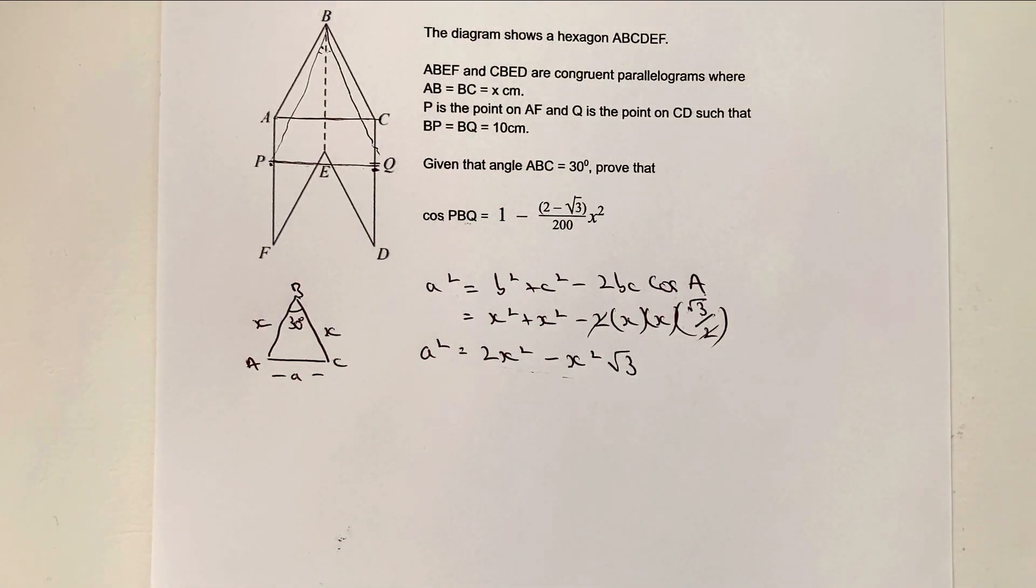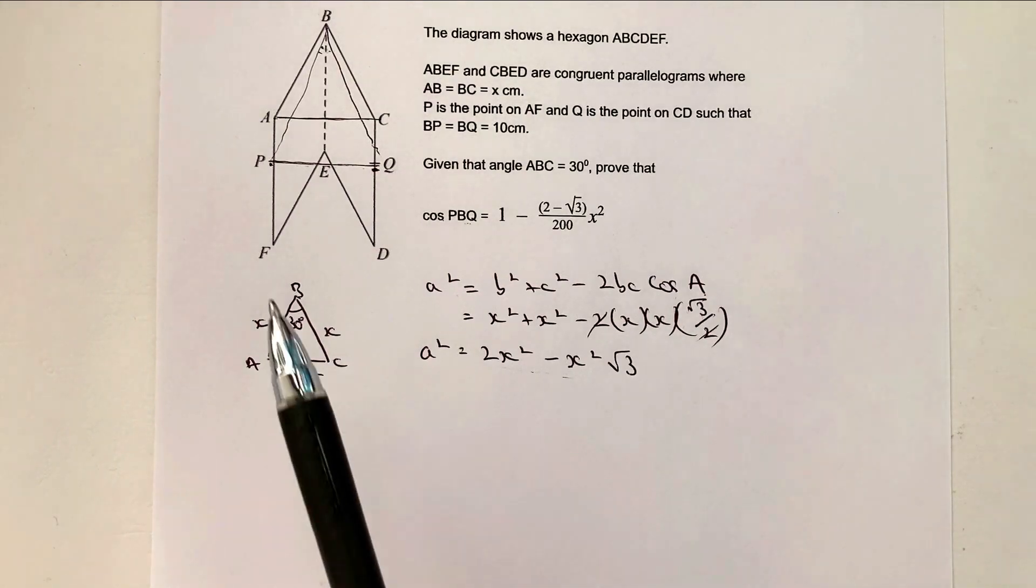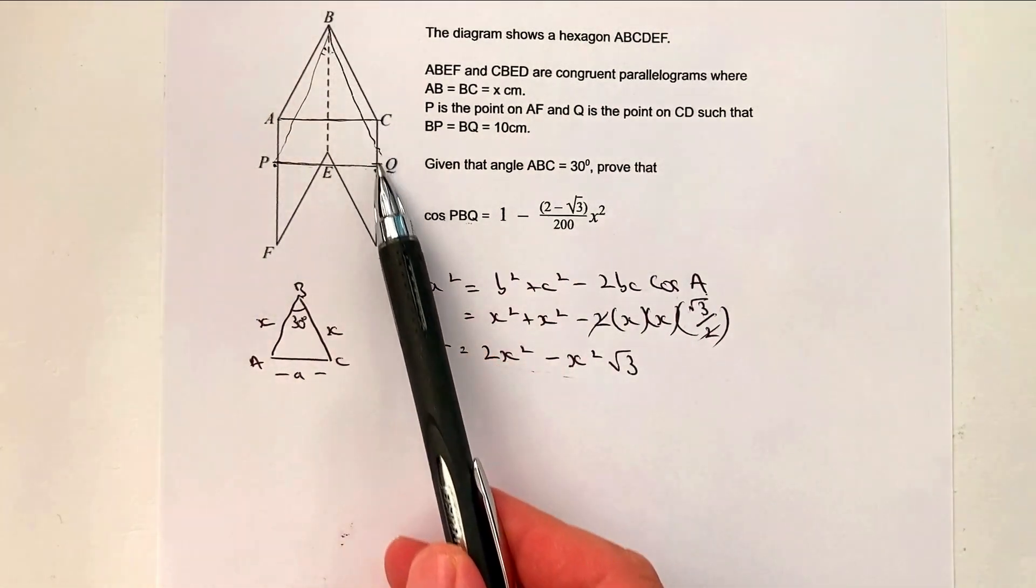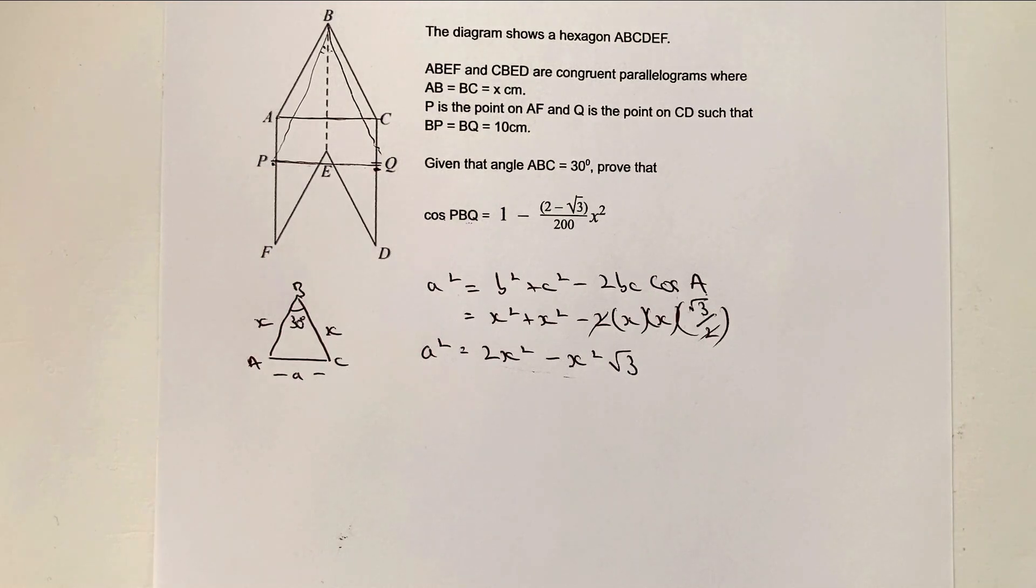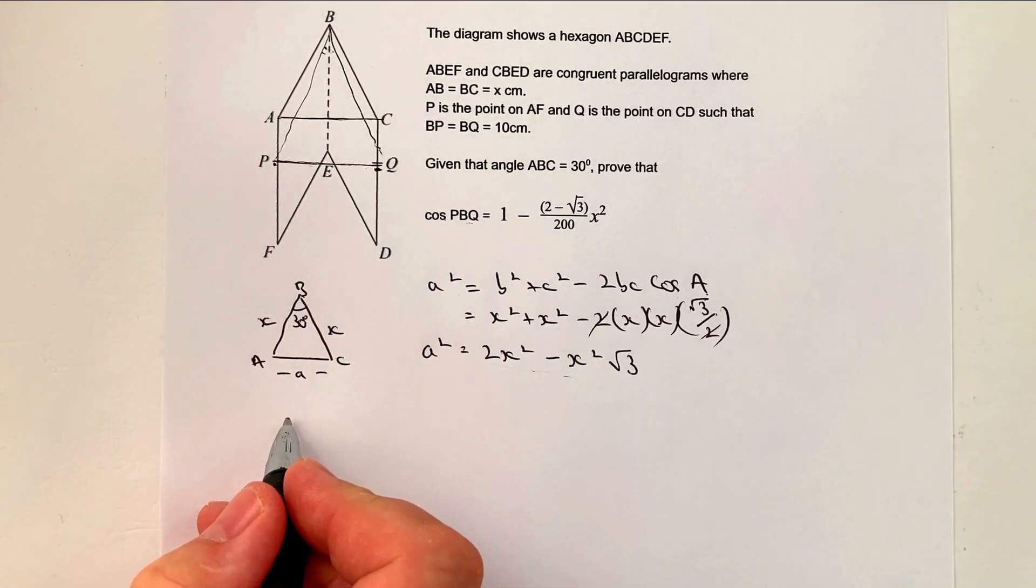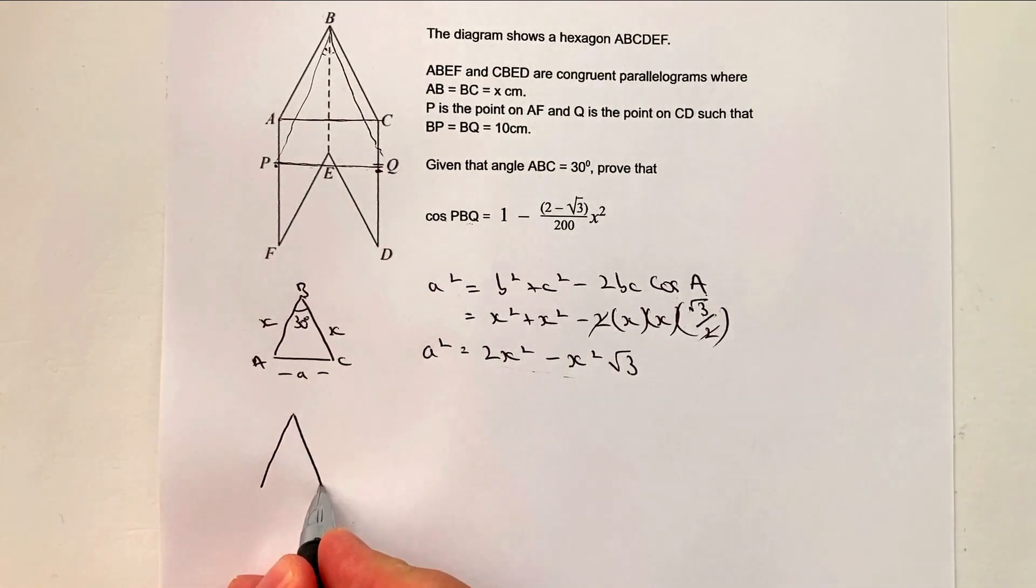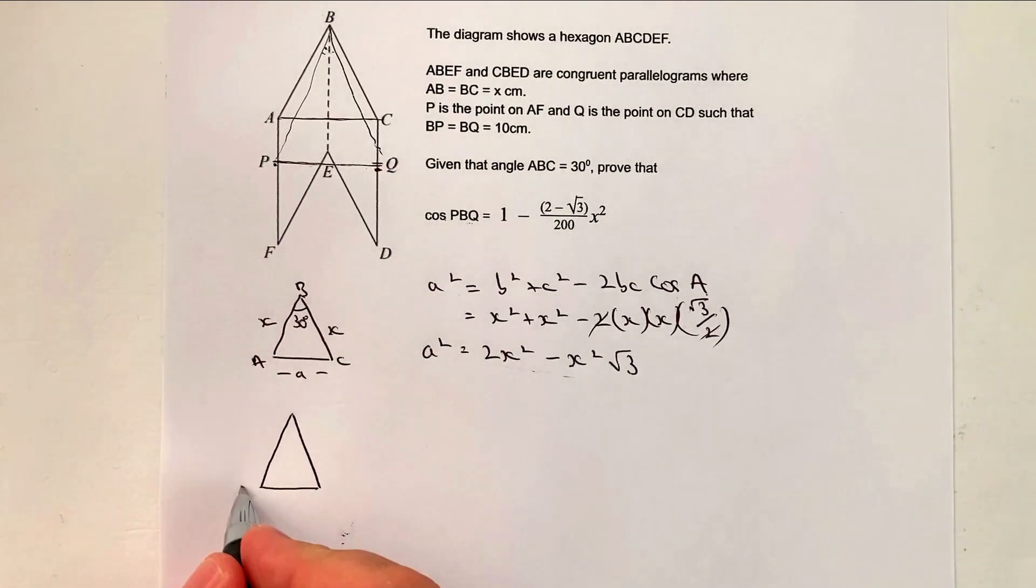Okay, so let's look now at the bigger triangle. The bigger triangle is going to be PBQ. And we are told various things about that particular triangle. So let's have a look and see if we can figure out what we can make use of.